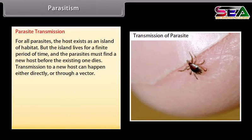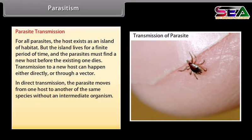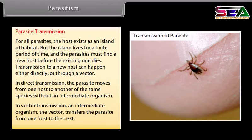For all parasites, the host exists as an island of habitat that lives for a finite period of time, so parasites must find a new host before the existing one dies. Transmission to a new host can happen either directly or through a vector. In direct transmission, the parasite moves from one host to another of the same species without an intermediate organism. In vector transmission, an intermediate organism — the vector — transfers the parasite from one host to the next.